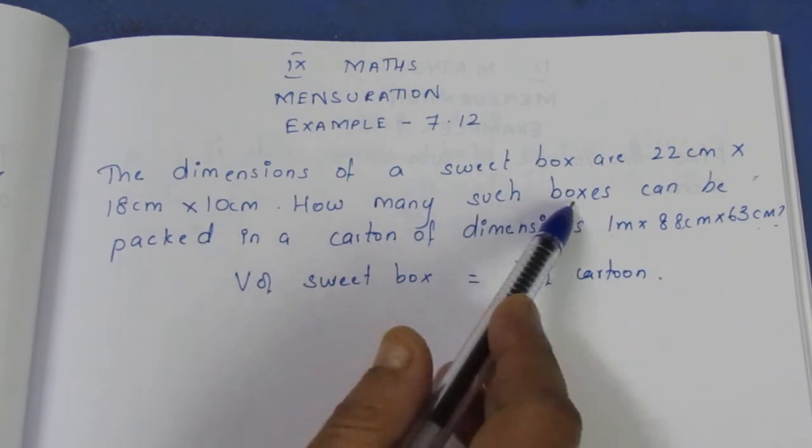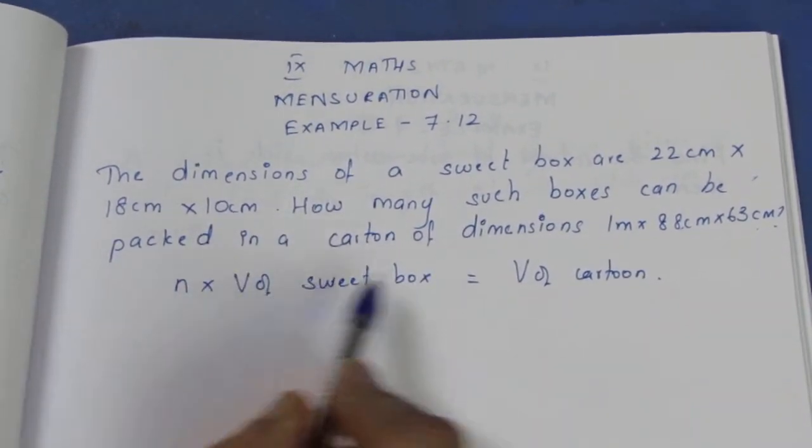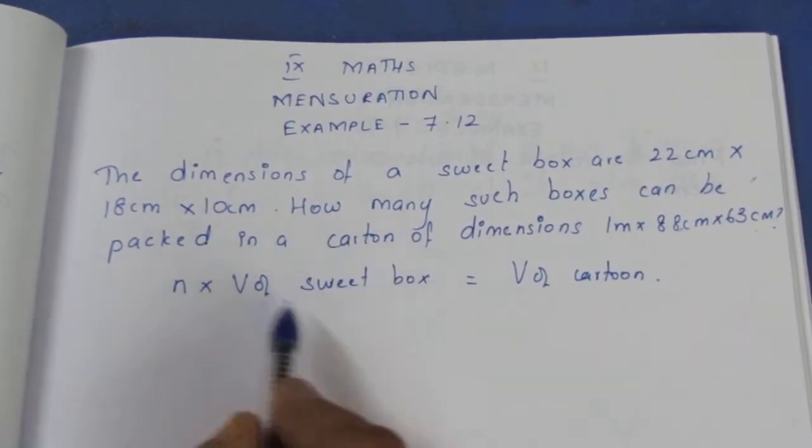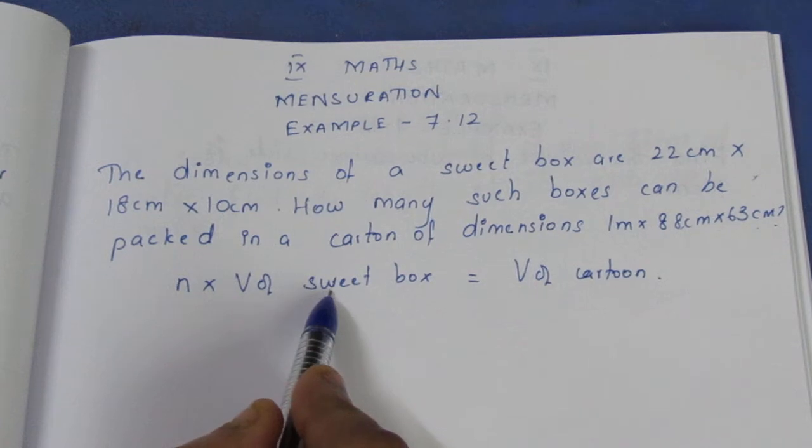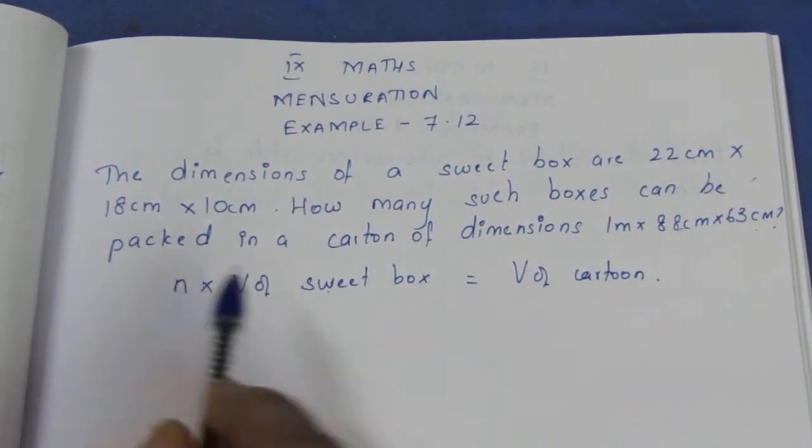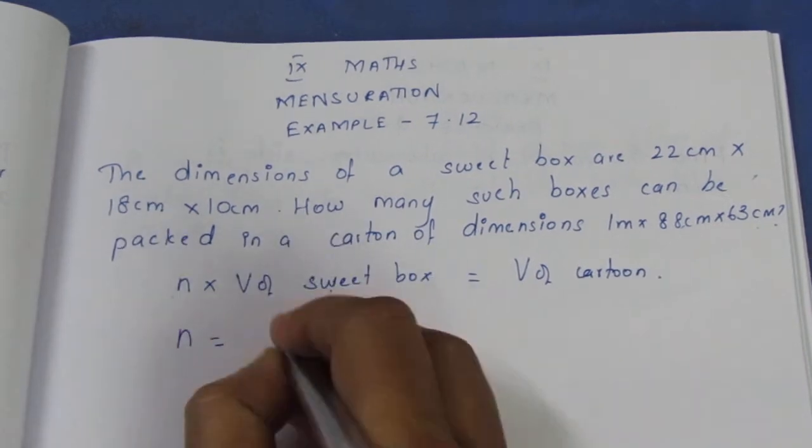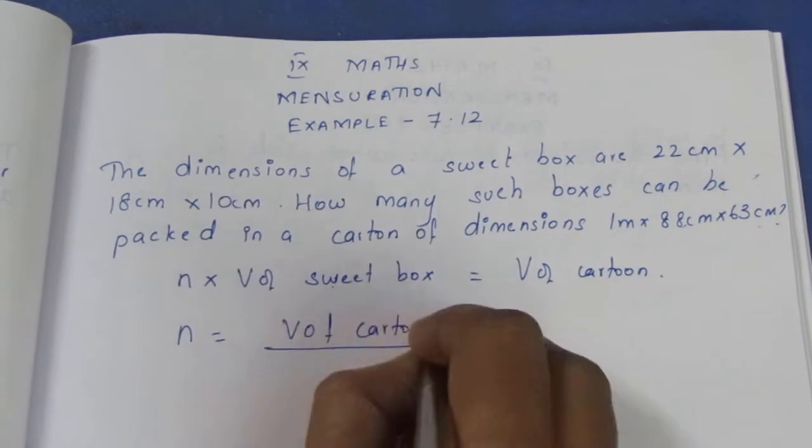So here, the number of sweet boxes n is equal to volume of carton divided by volume of sweet box.